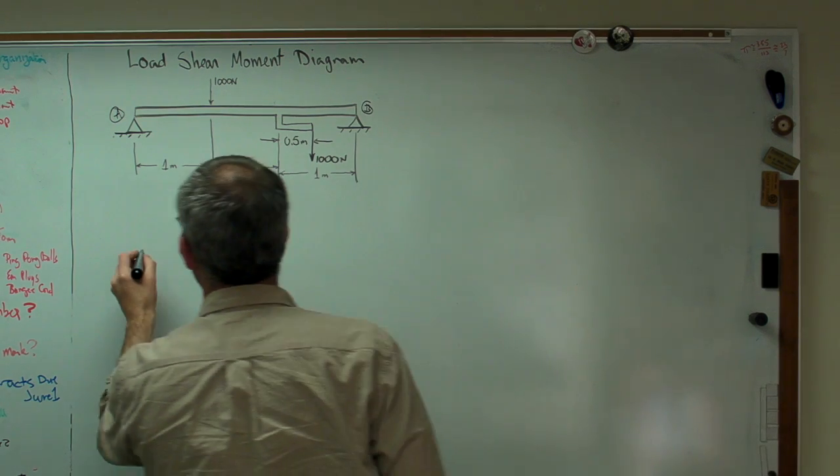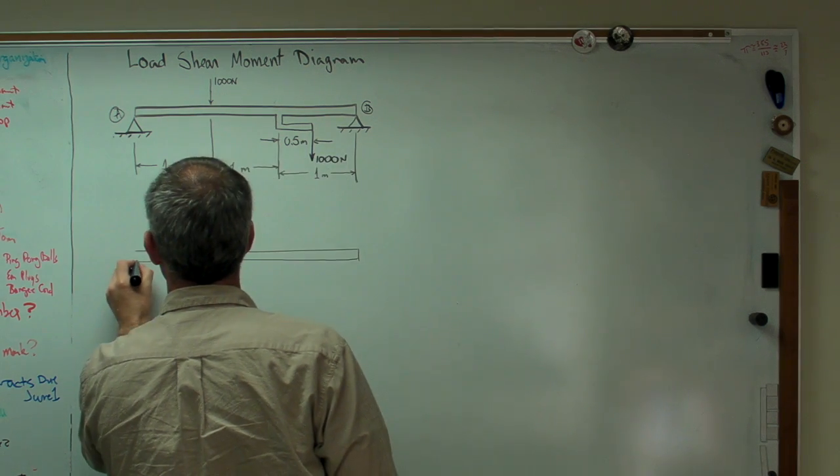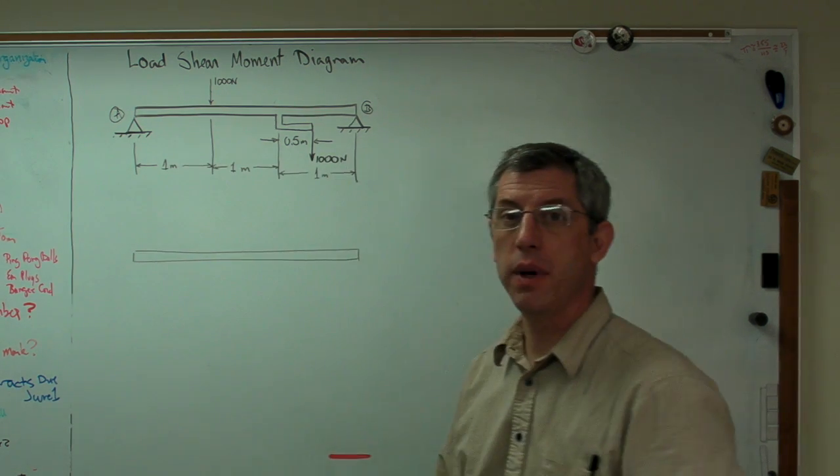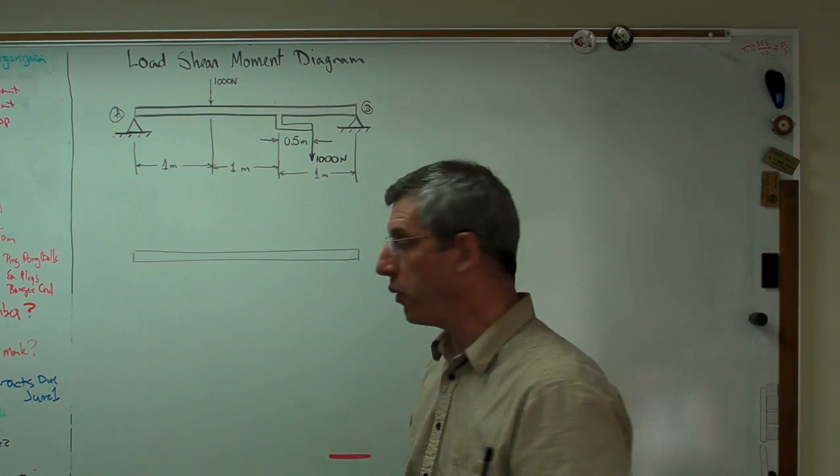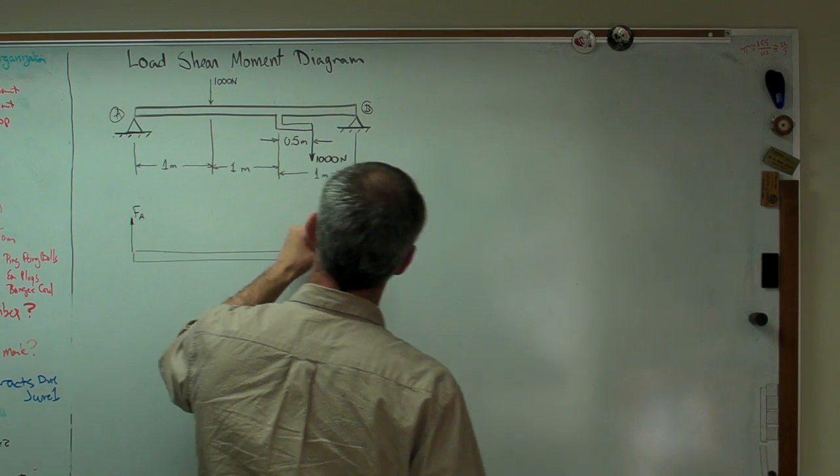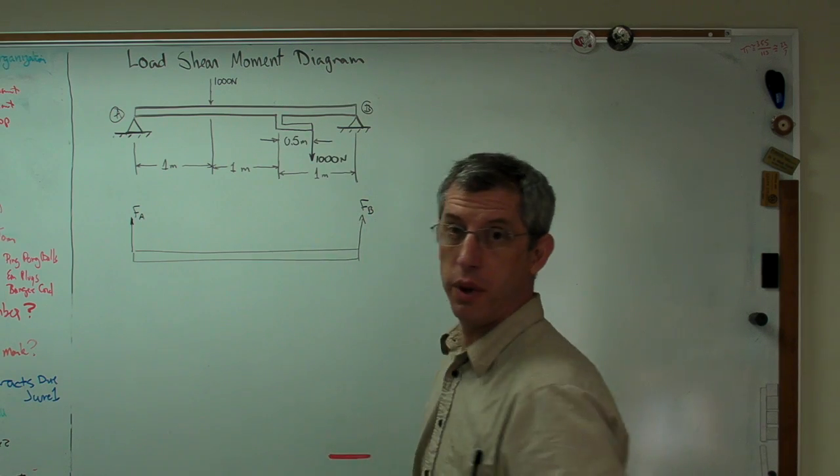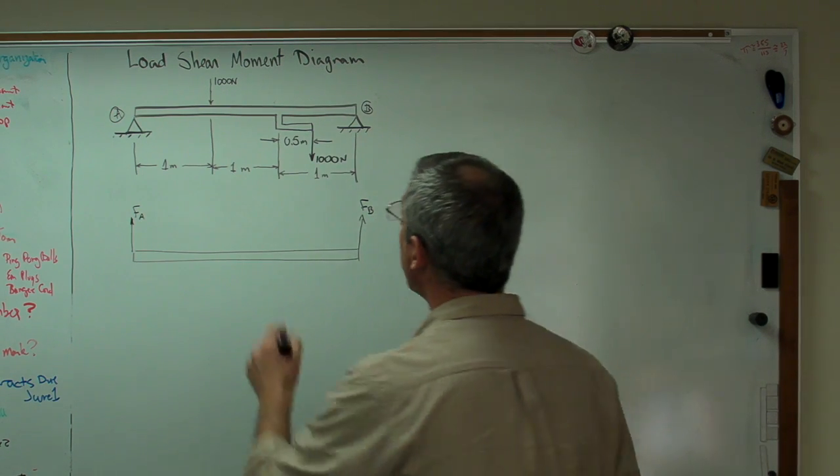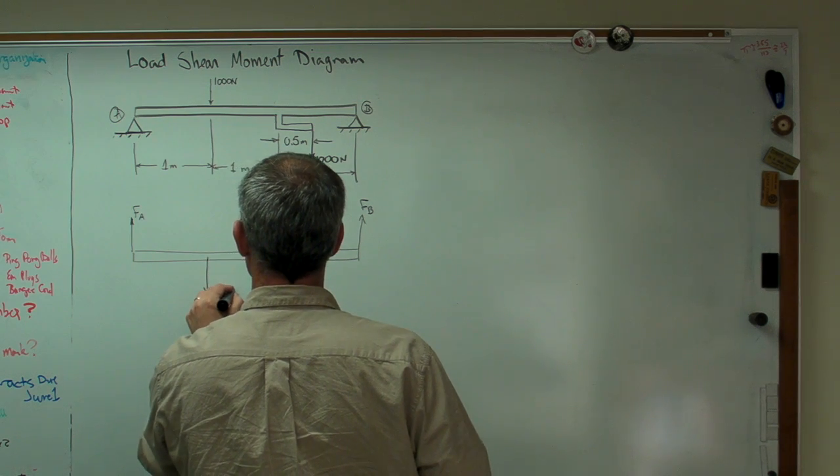To draw the free body diagram, there's just the beam. The pins here at the end are going to generate a vertical force, so I'm going to call that FA and that FB. Don't know what they are yet. We're going to find that out. Now, this force down is easy. That's a thousand newtons.